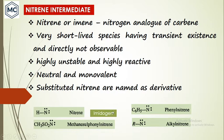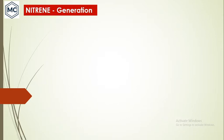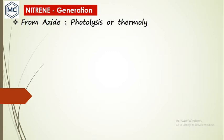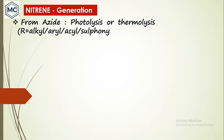These are examples of nitrenes. This nitrene is also called imidogen. This is methanesulfonyl nitrene, which is an alkyl nitrene, and this is phenyl nitrene. How are these nitrenes generated? The first example is from azides — by photolysis or thermolysis of alkyl, aryl, acyl, or sulfonyl azides.